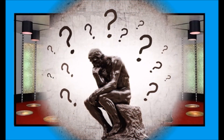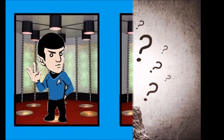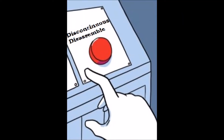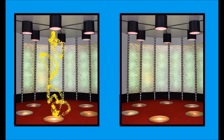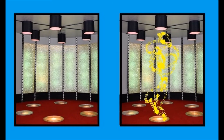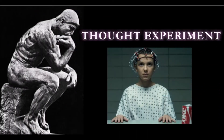Finally, third, is the discontinuous disassemble concept. In this case, we press the teleport button and Spork is instantaneously disassembled into teeny tiny molecular bits. These bits are uploaded into the teleport machine at point A, and then the machine downloads the bits at point B where Spork is reassembled.